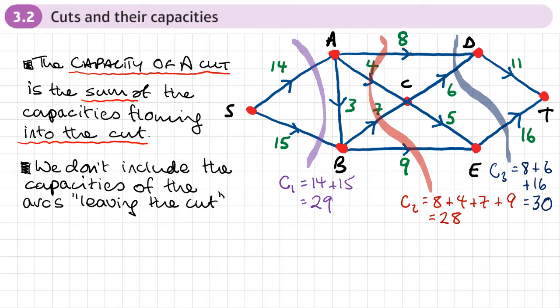And same thing with the last cut. We'll do the same thing. So imagine a puddle of water being created because the pipes have been cut. What water is going into that cut? Which pipes? So this one, this one, the 8, the 6 and the 16. So again, gives us the same capacity as before. So use that method if you're not 100% sure, or you can just use it all the time to find the capacity of a cut.